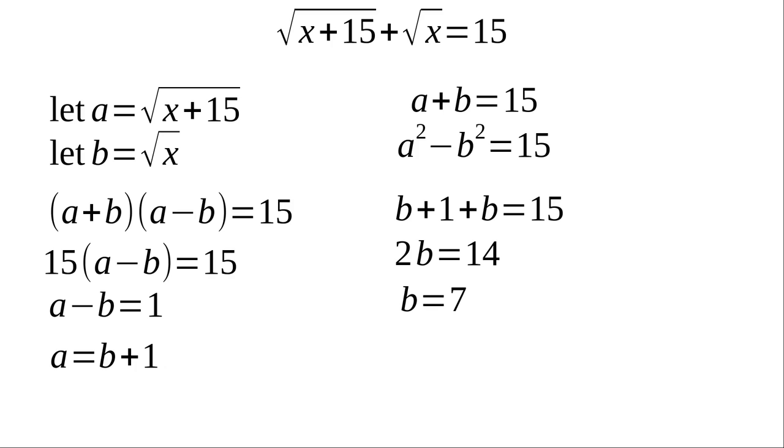Now, if you remember, we set b equal to the square root of x, which means 7 is the square root of x. And that means if we square both sides of that, we get x equals 49. And that means we've got the same result with this method.